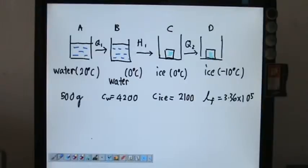In this question, they would like to find out what happens if 500 grams of water at 20 Celsius is transformed to 0 Celsius water, then changed to ice, and then changed to negative 10 Celsius ice.